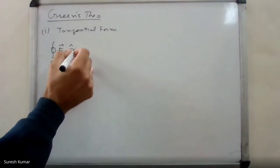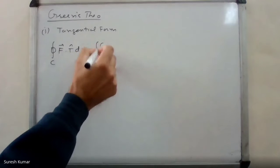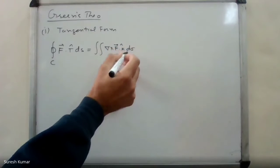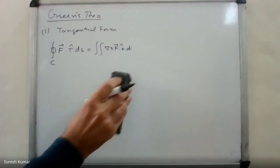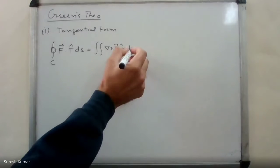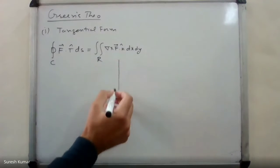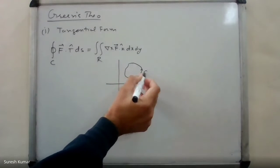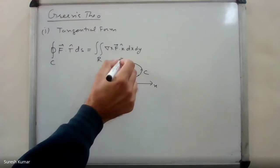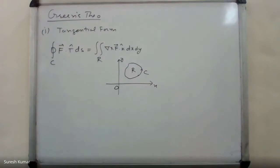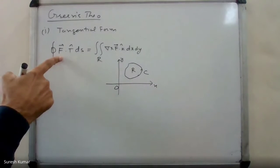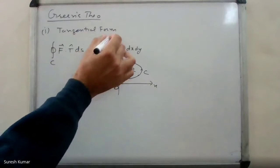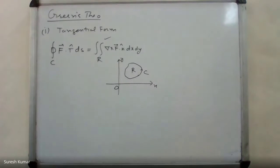Then, the counter-clockwise circulation of F along C is given by the double integral of curl of F dot k-hat over dA. The situation is: you have a piecewise smooth simple closed curve C enclosing the region R in the x-y plane. The counter-clockwise circulation of F along C equals the double integral of curl of F dot k-hat over region R. This theorem provides an alternative formula for finding the circulation of F along C.